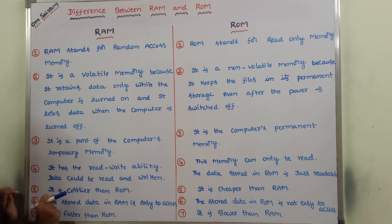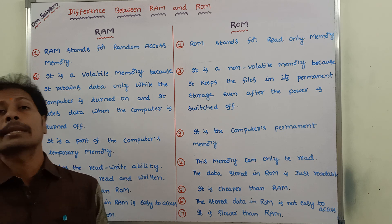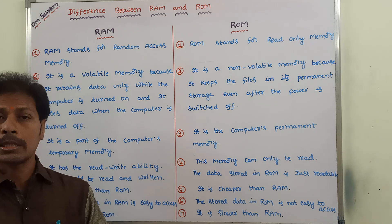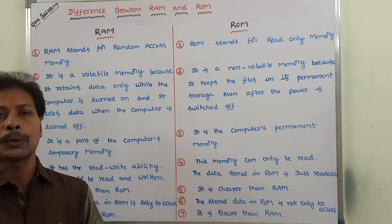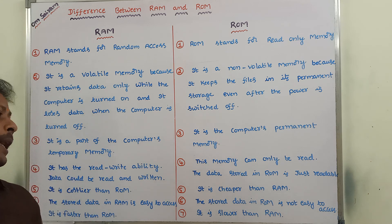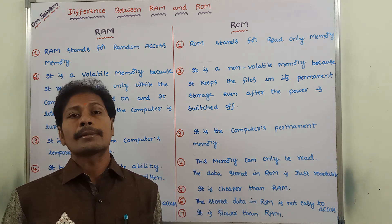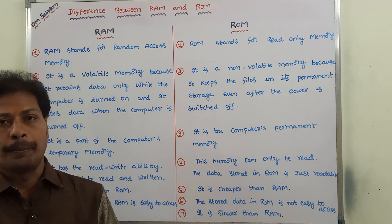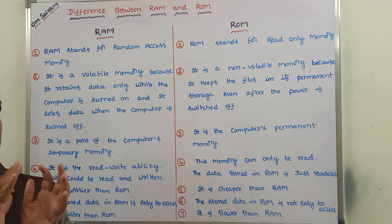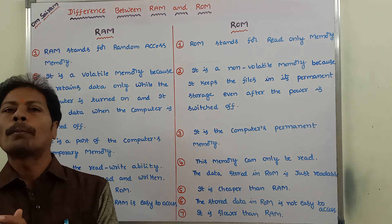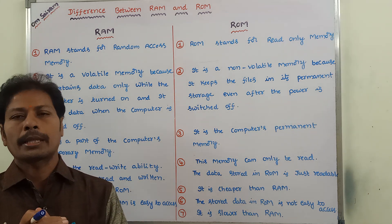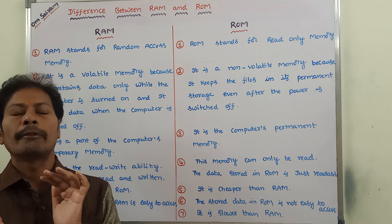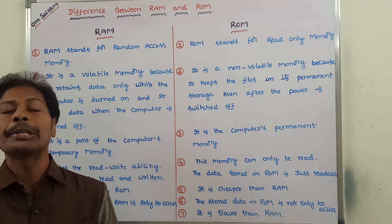Fifth point: RAM is costlier when compared to ROM, whereas ROM is cheaper when compared to RAM. Among RAM and ROM, Random Access Memory is costlier when compared to Read Only Memory.